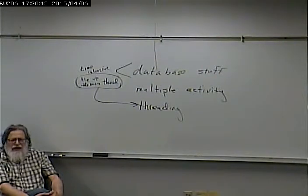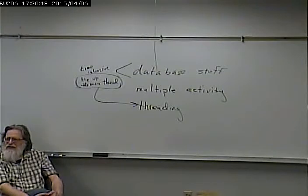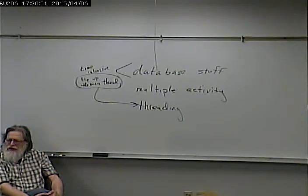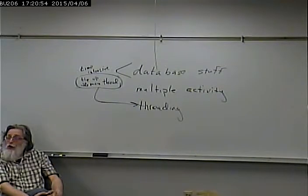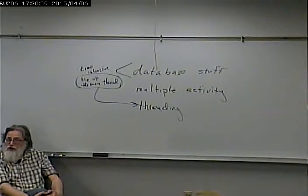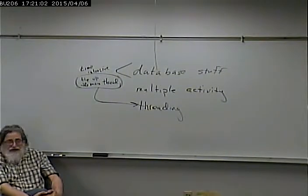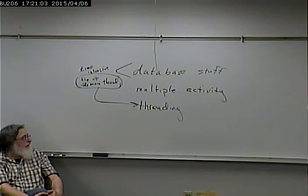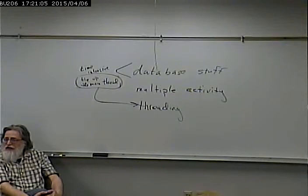Think of an activity in terms of something you want the user to do. Seeing a list of your contacts is something you want the user to do. Going and viewing the details of a contact is something you want the user to do. Lastly, editing or adding a new contact is something you want the user to do. Therefore each of these is an activity where you're presenting a screen that the user can do something at.